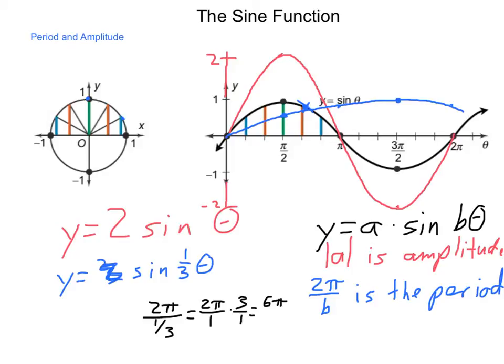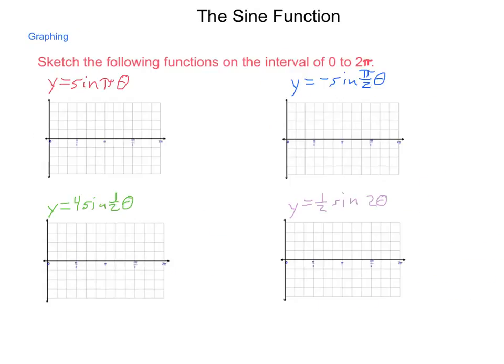When you have to construct graphs, there are typically two different requests that are given. Either 1, graph 1 cycle, or 2, graph it on a specific interval. Let's get a little bit of practice at graphing some of these functions. So we're going to sketch the graphs of the following functions on the interval from 0 to 2π. Part of this is we're going to be finding out what our amplitude is and our period. So our amplitude for our first one is the multiplier in front of our sine. No multiplier is shown, so it's assumed to be 1. Next, our period is 2π divided by b. And if you look, our b value is π. So 2π divided by π is simply 2.